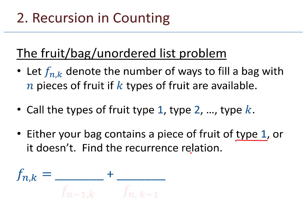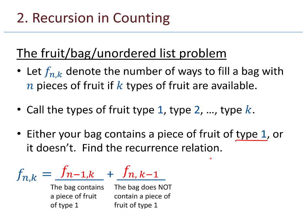The solution is f_{n,k} equals f_{n-1,k} plus f_{n,k-1}. The first expression is the number of ways the bag can contain a piece of fruit of type 1, and the second is the number of ways the bag cannot contain a piece of fruit of type 1. Our base conditions are those two cases. This ends section 5.5 on recursion in counting.